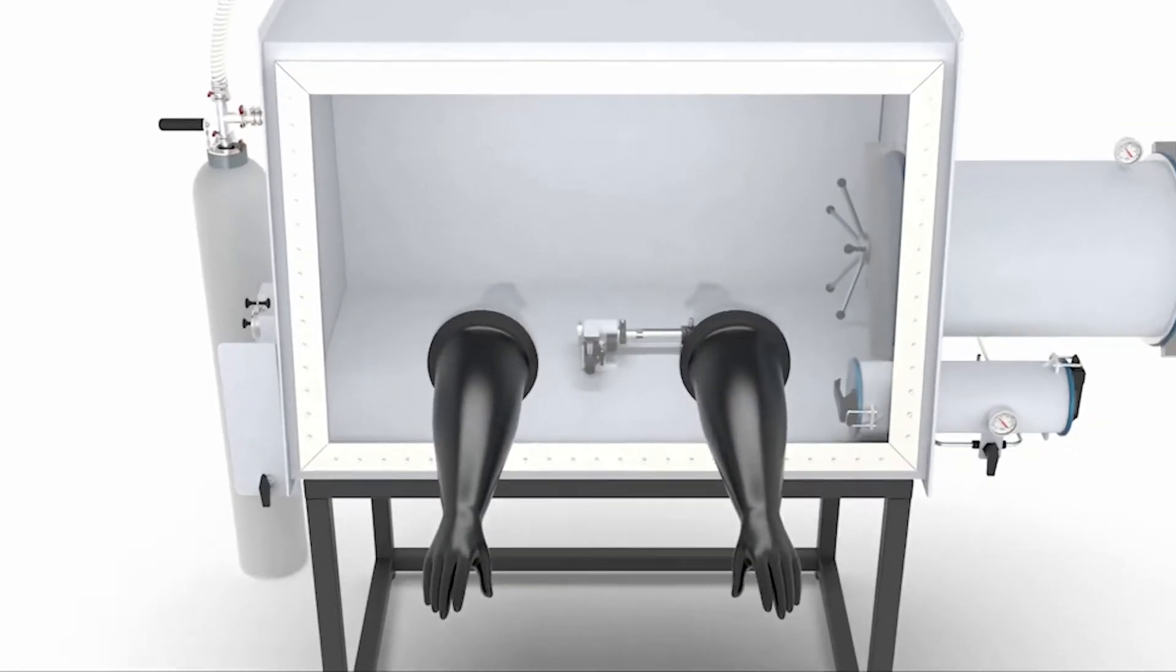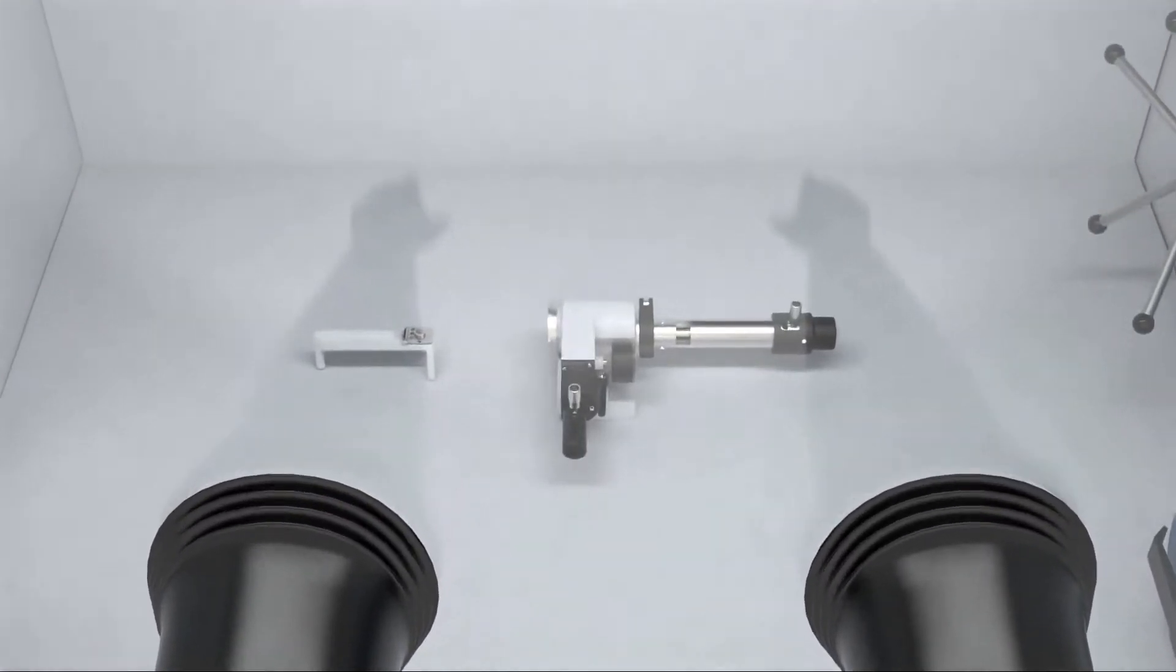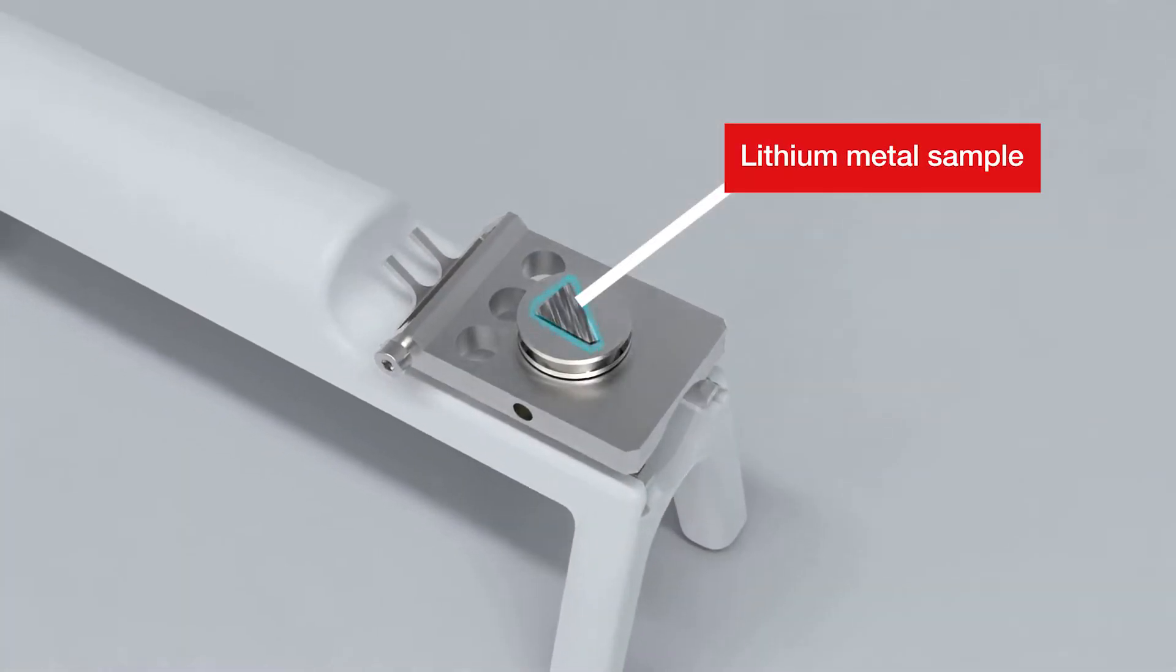Let's look at the sample preparation in a glove box with an example of the air sensitive battery material, lithium. Lithium requires additional care and handling to avoid any changes in its material properties due to air exposure.